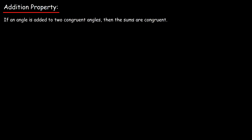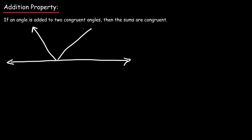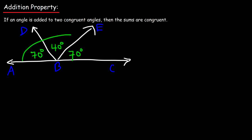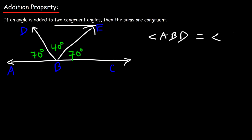Now let's talk about the addition property as it relates to angles. If an angle is added to two congruent angles, then the sums are congruent. So let's use an example to illustrate this. Let's say this is A, B, C, D, and E. Now let's say angle ABD is 70°, angle CBE is 70°, and angle DBE is 40°. The two congruent angles are angle ABD and angle EBC — they're both equal to 70°.